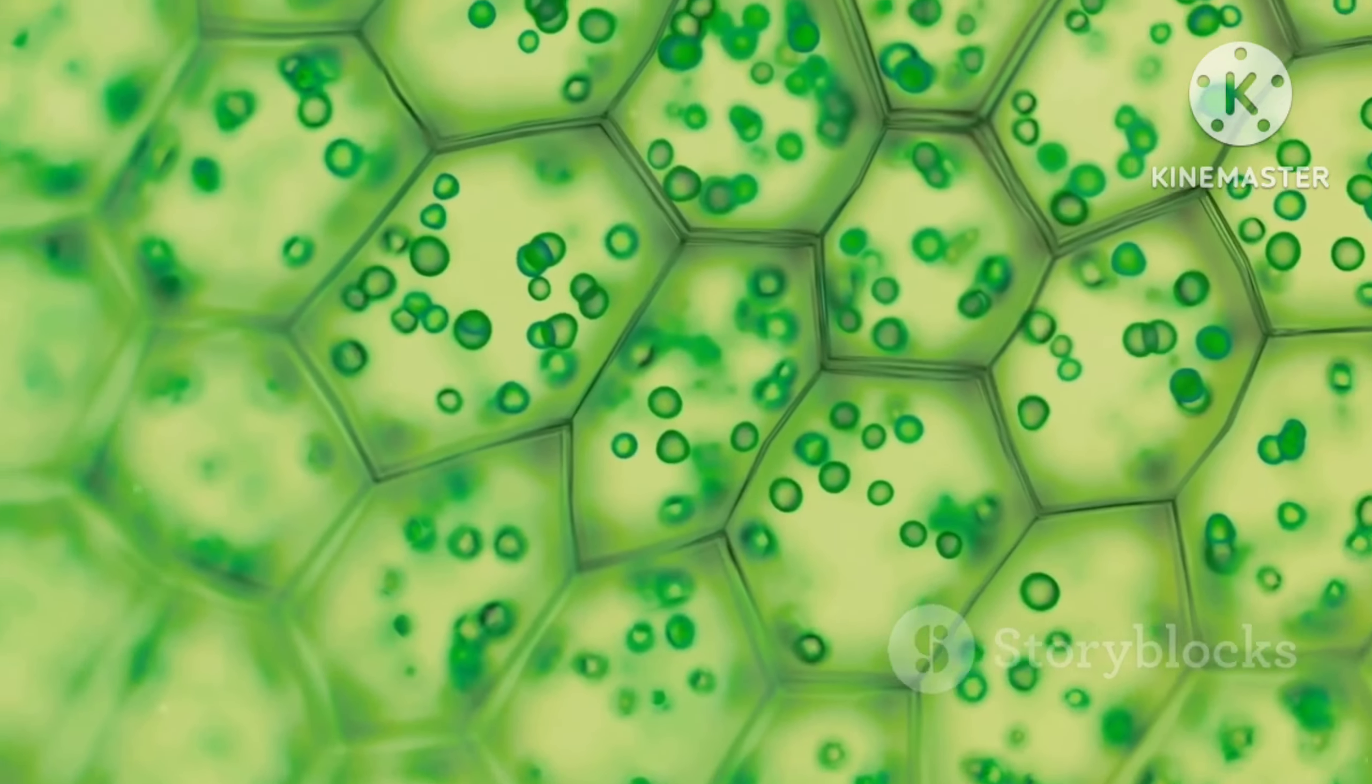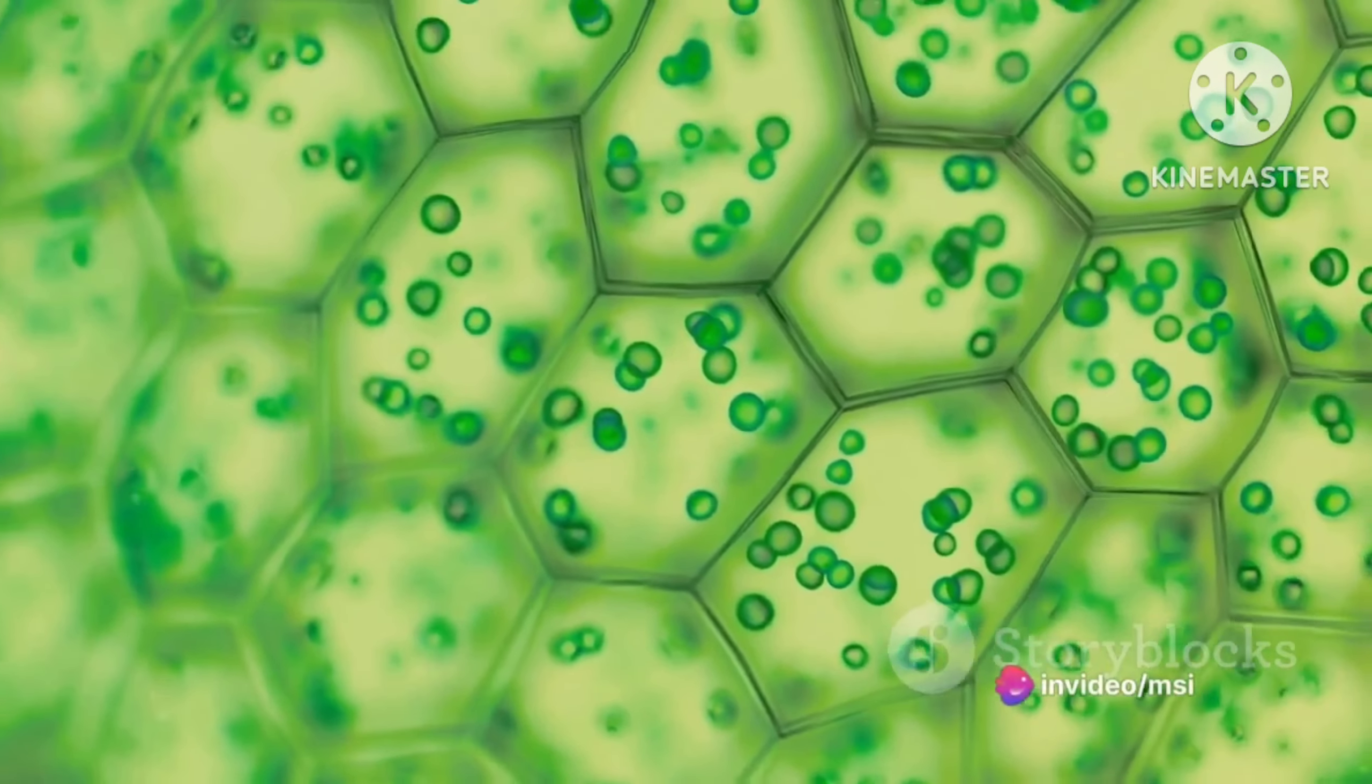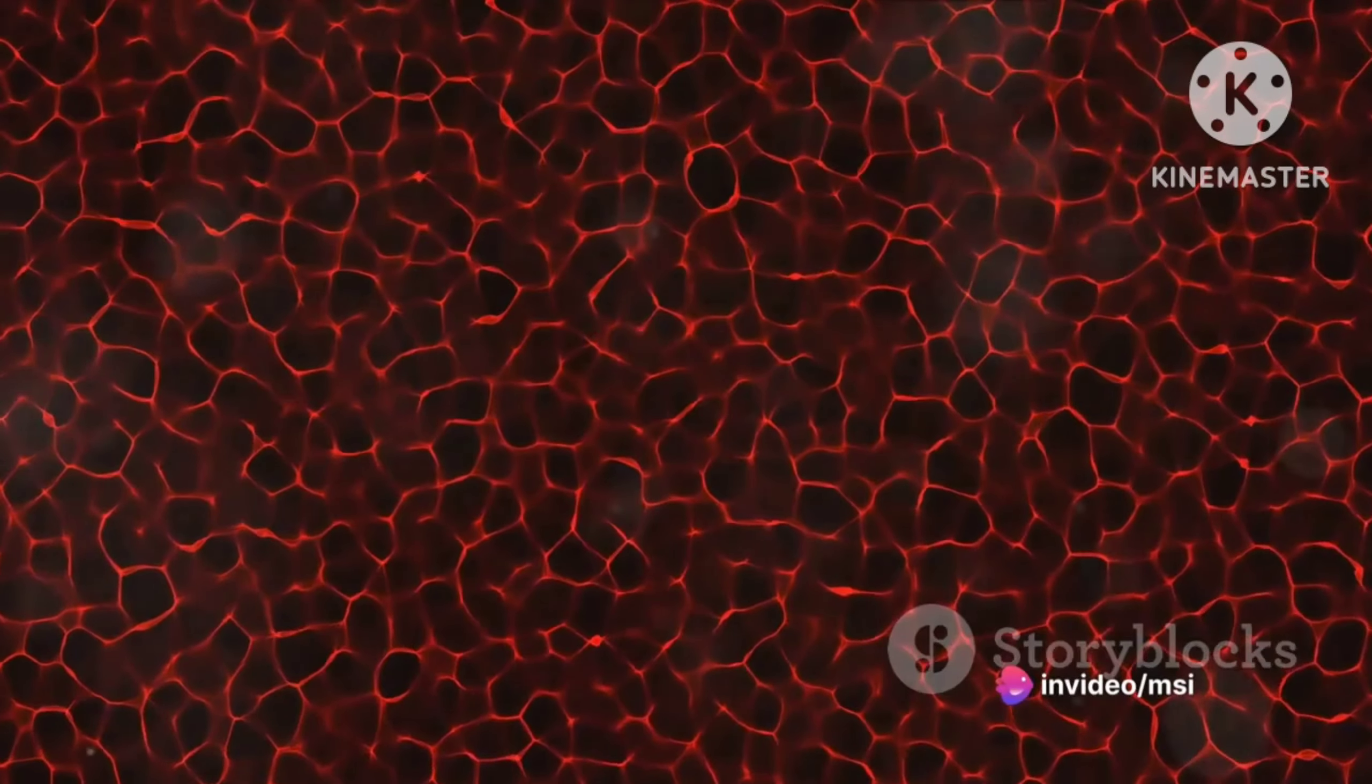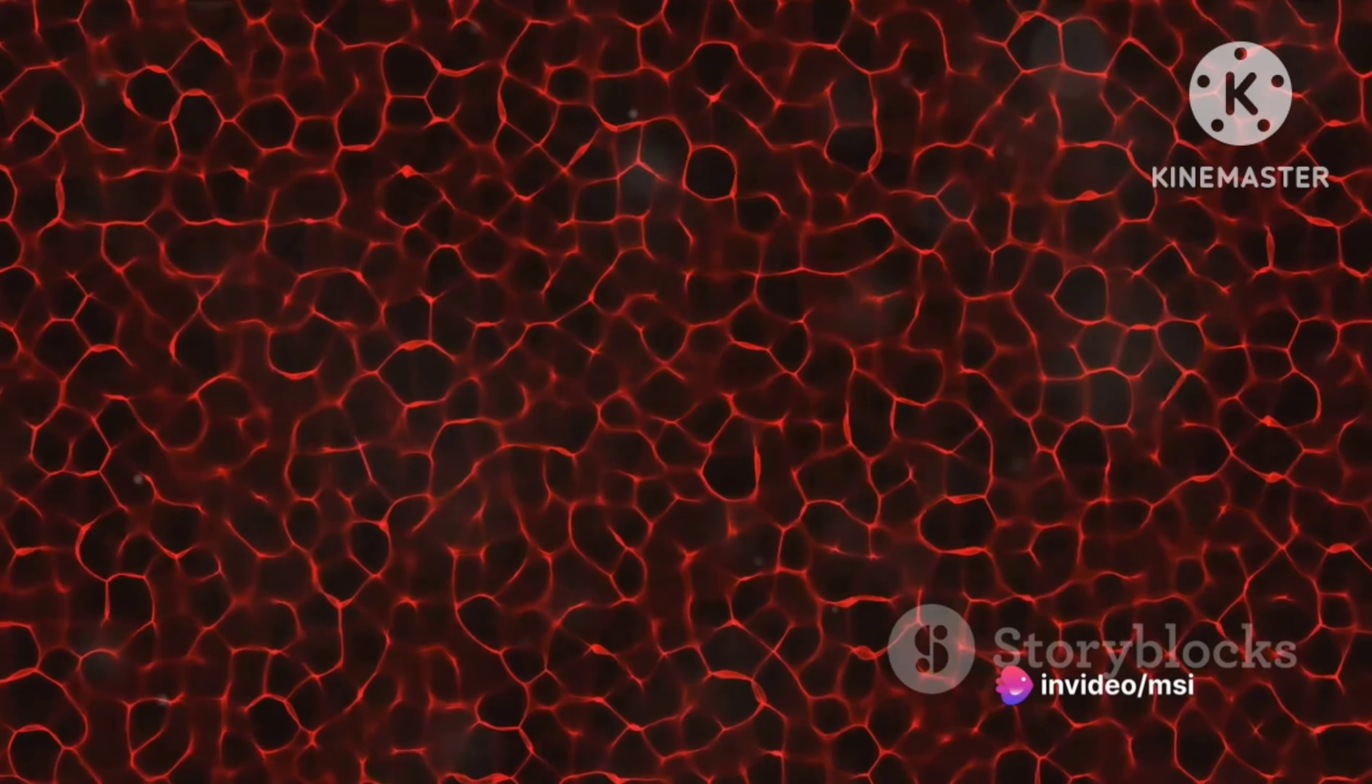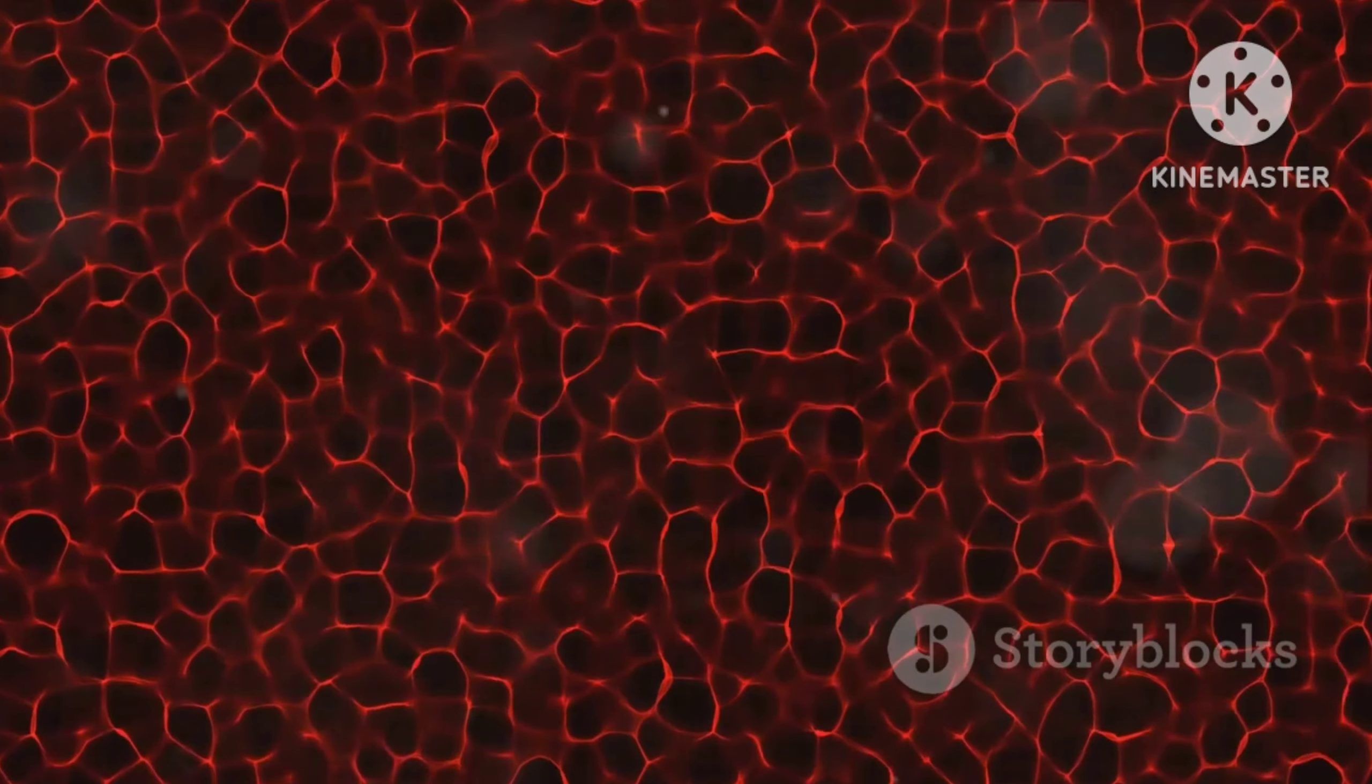Some eukaryotic cells, like those in plants, even have chloroplasts for capturing sunlight and converting it into energy. These cells form the building blocks of all multicellular organisms, from plants to animals, fungi, and even single-celled eukaryotes like amoeba.